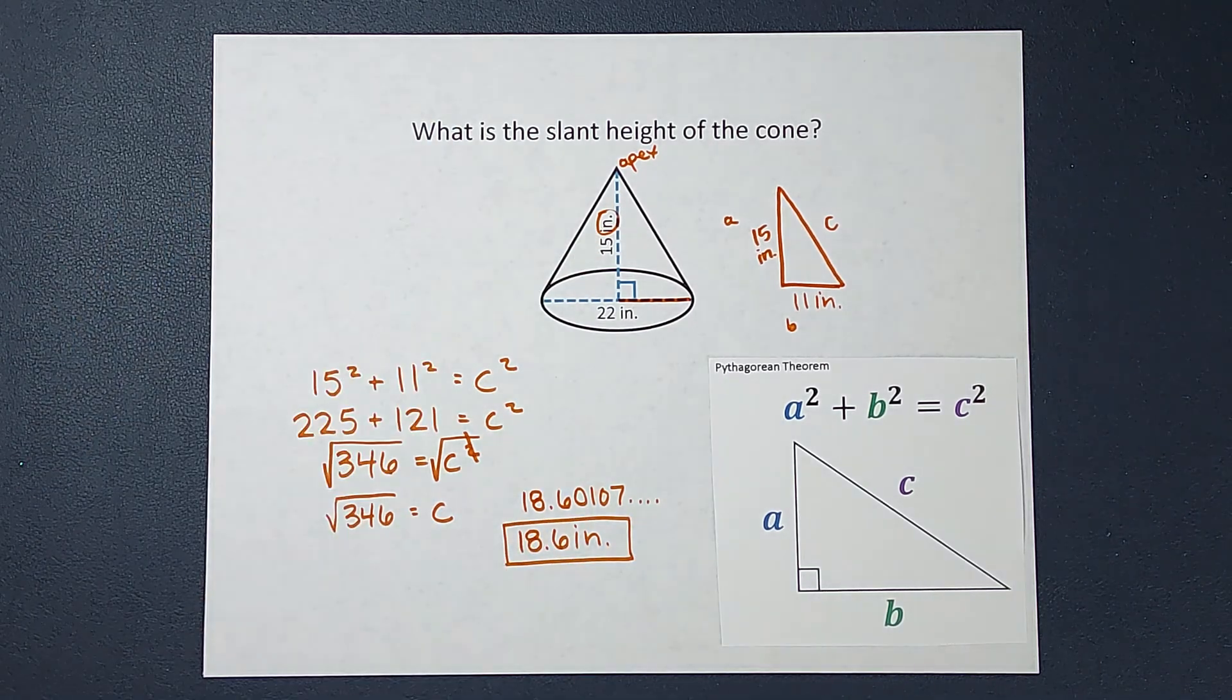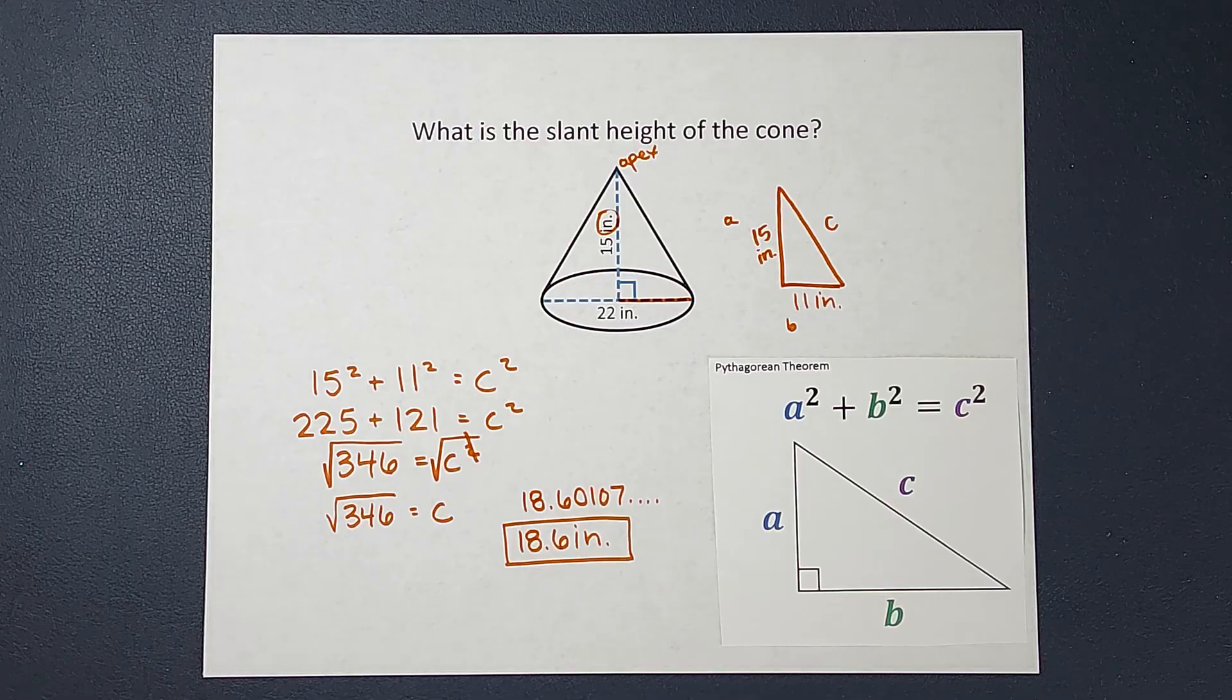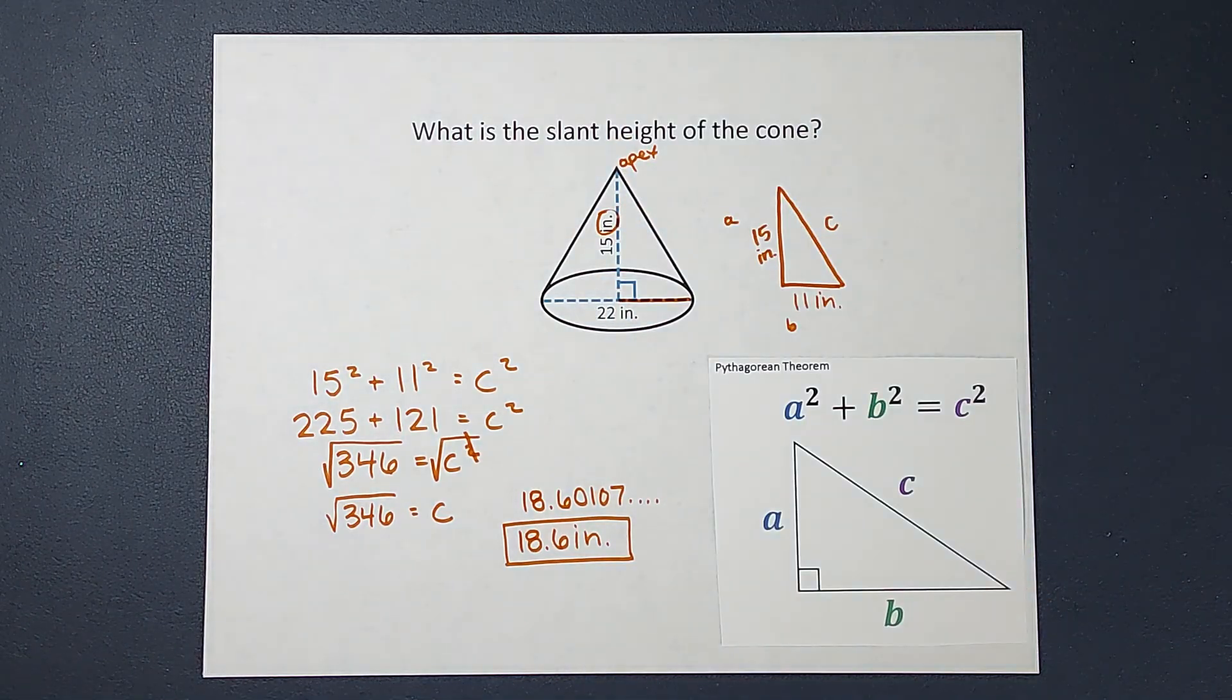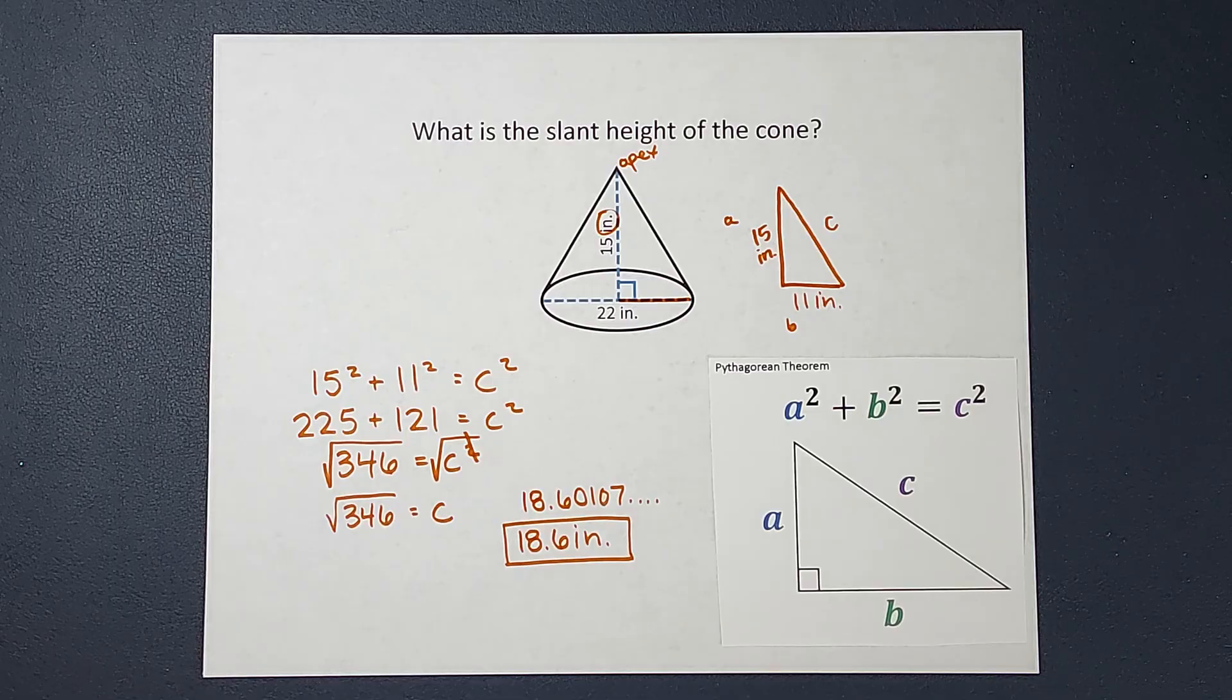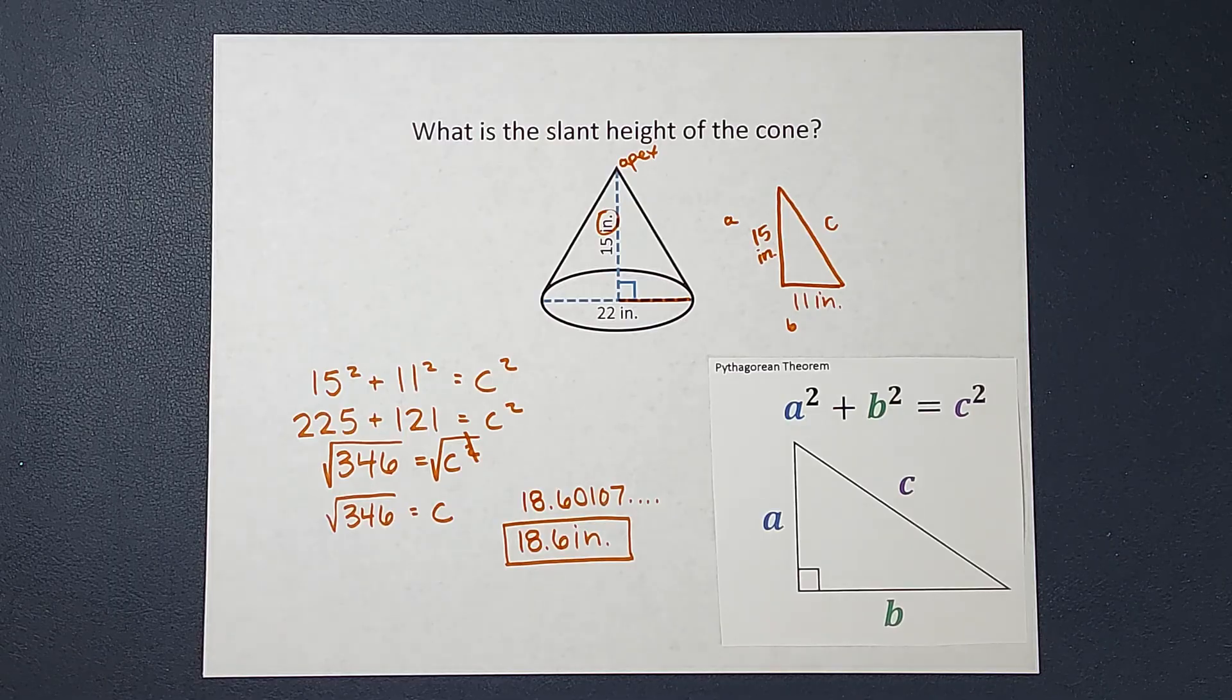We started out with a cone, we didn't know the slant height, we used the fact that there is a right triangle hidden in there. Use the Pythagorean theorem to figure out the slant height. Hopefully that made sense, thanks, bye!